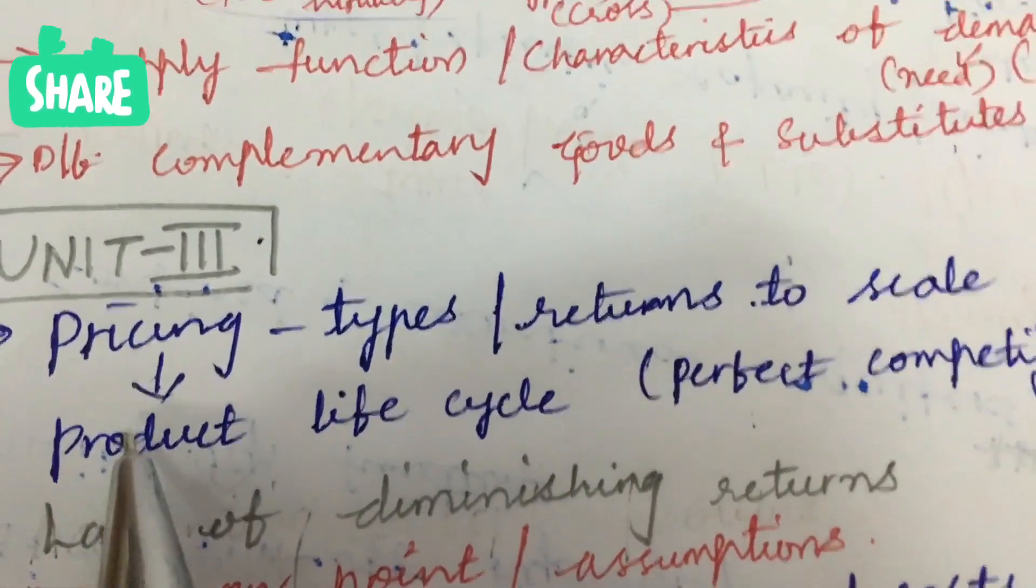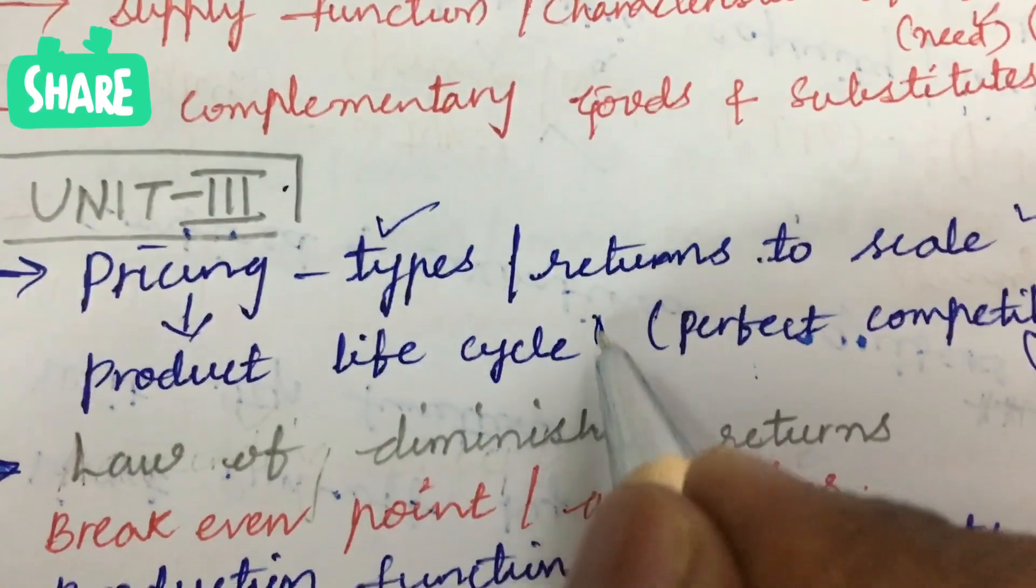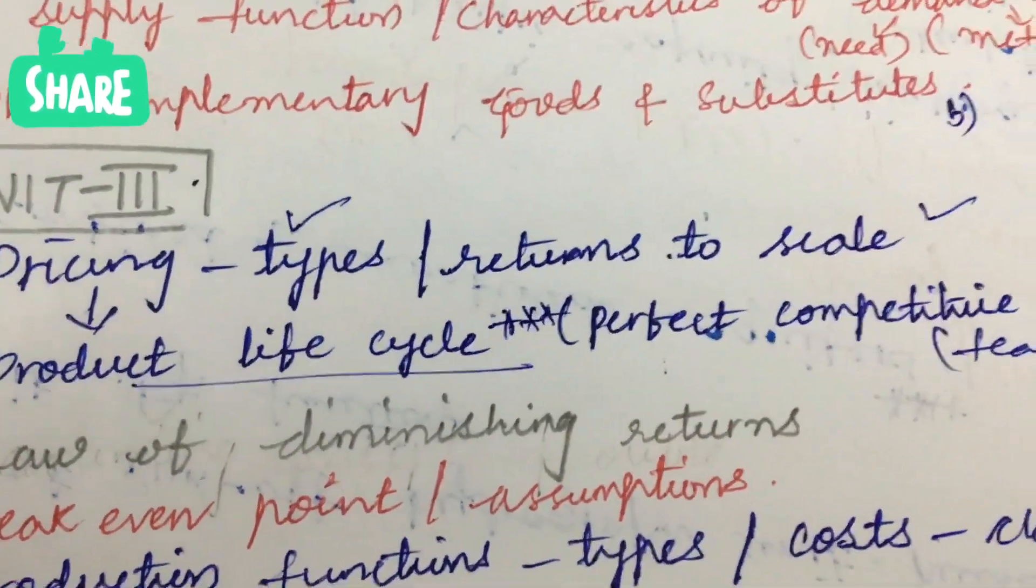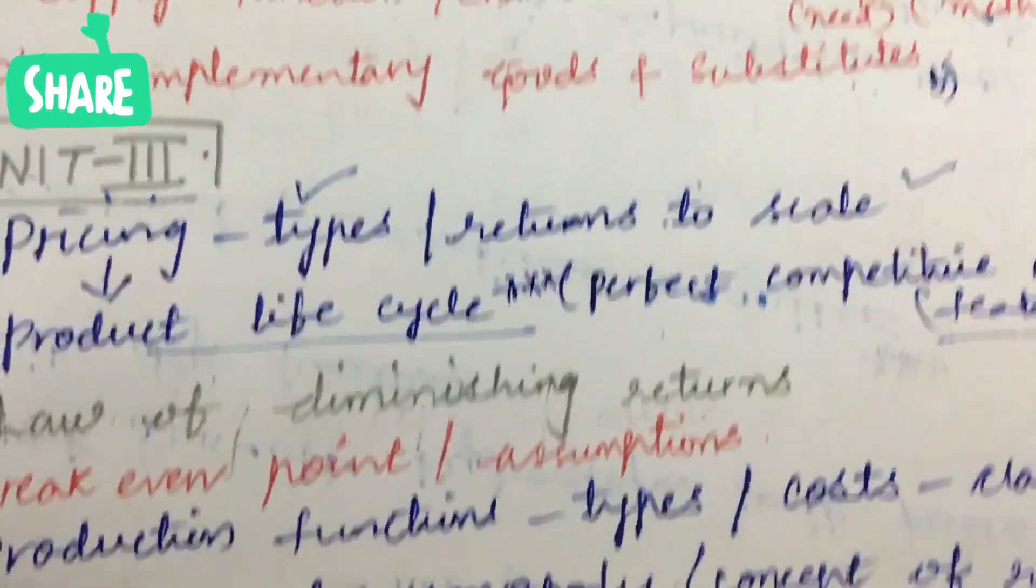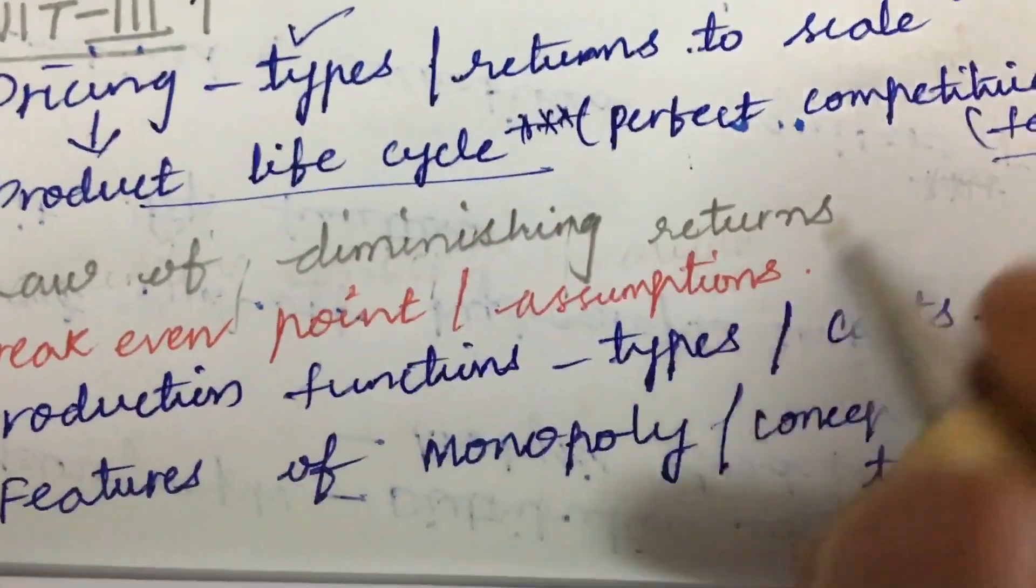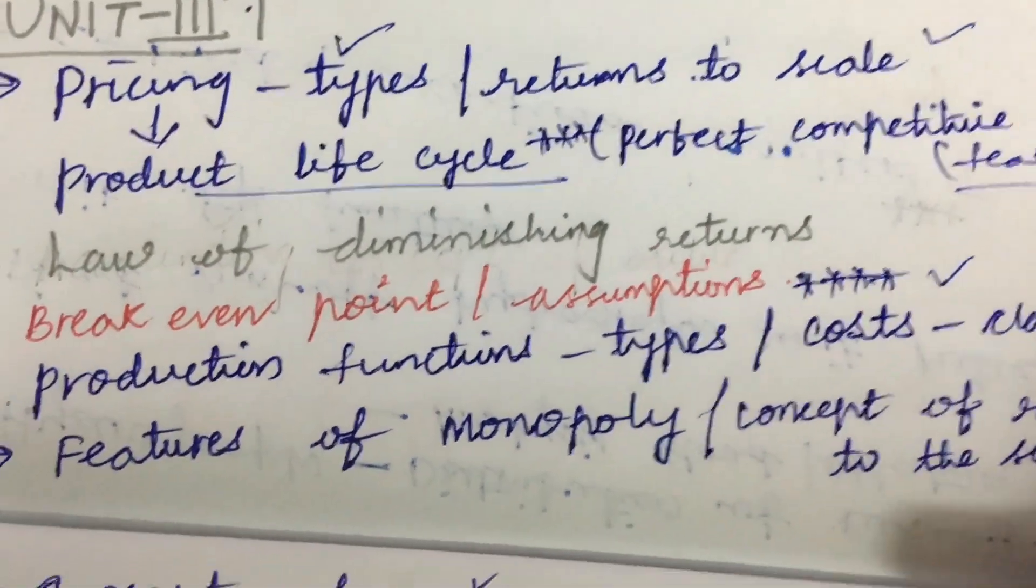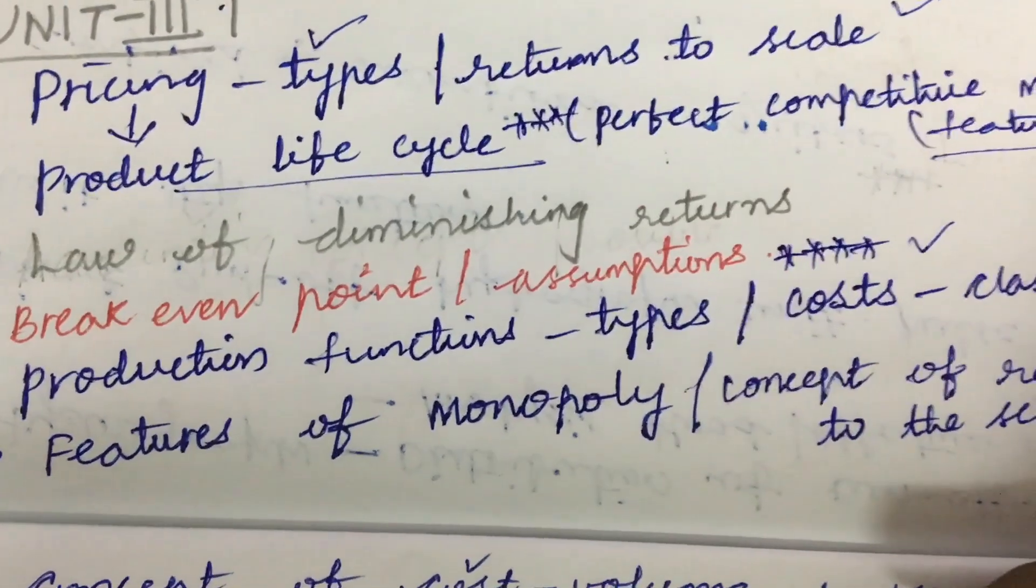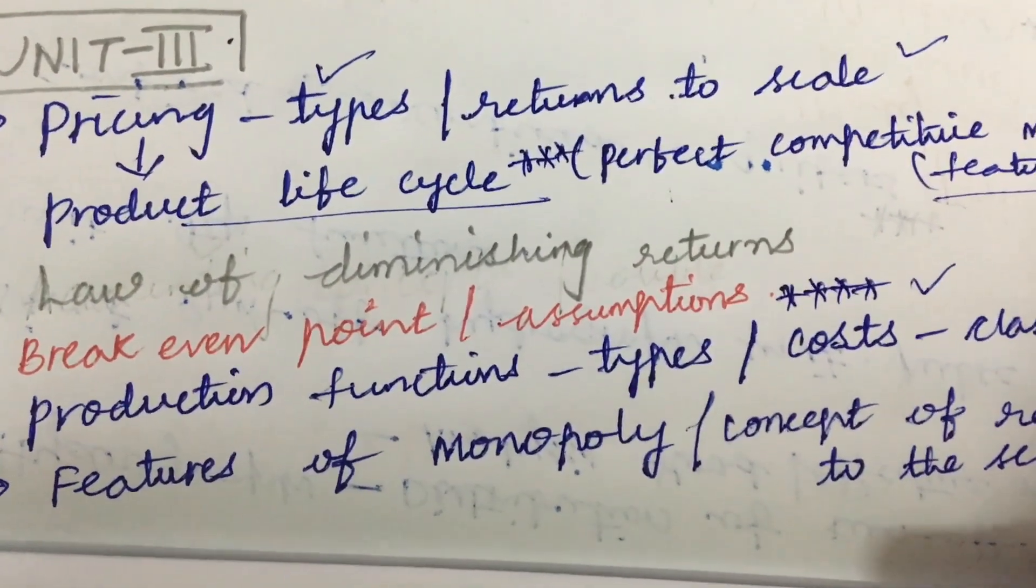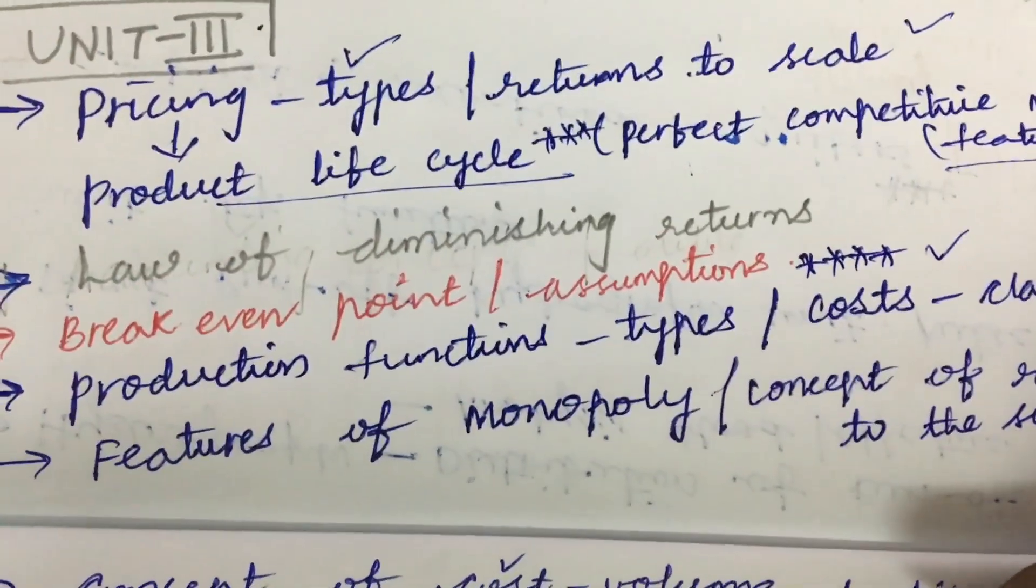Define pricing and its types, returns to scale, as well as product life cycle—one of the sure-shot questions coming for sure this time, as well as perfect competitive market features. The laws of diminishing returns, break-even point, and assumptions are also sure-shot questions you can expect. As per the COVID pattern, 8 questions will be given where you are supposed to write any 5. For Units 1, 2, and 3, you are going to get 6 questions—I mean, each unit 2 questions, dear students.